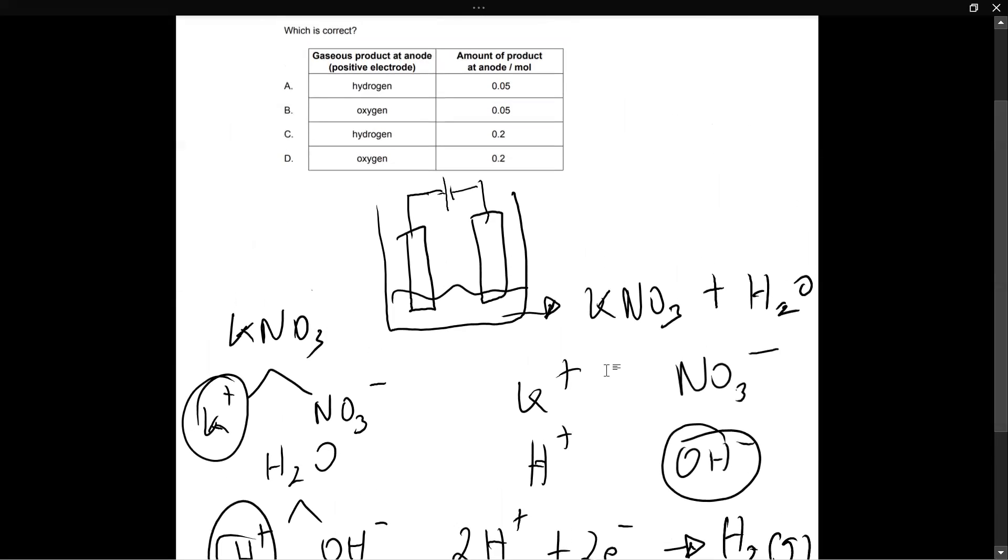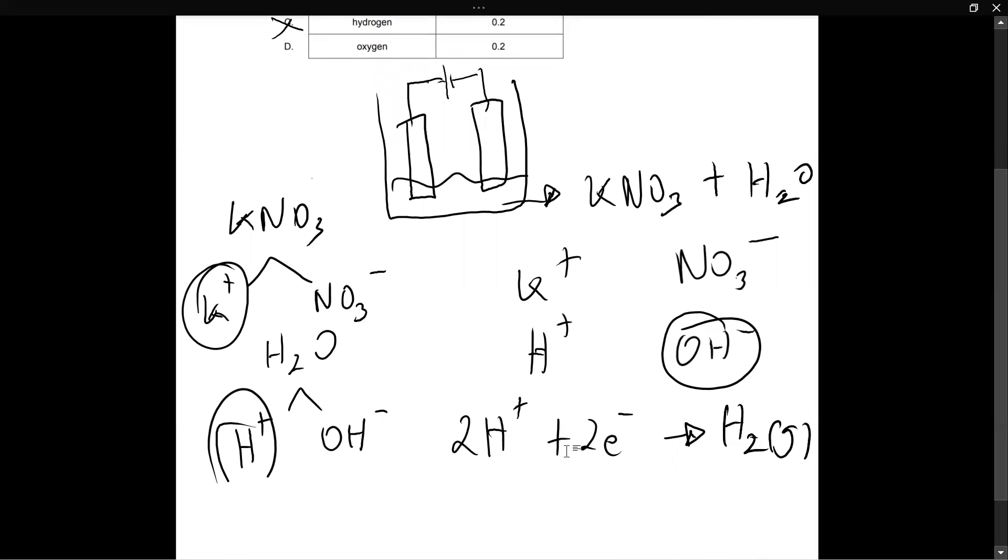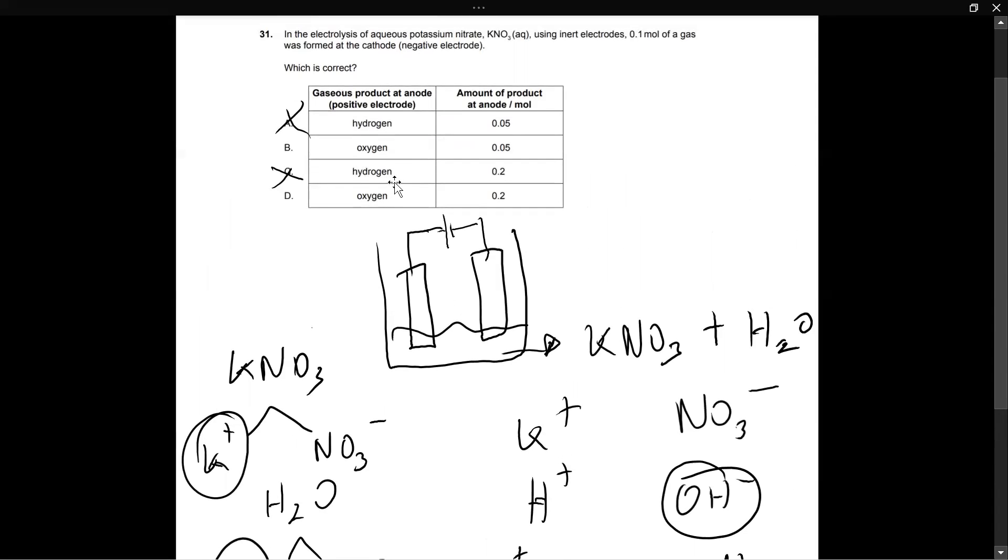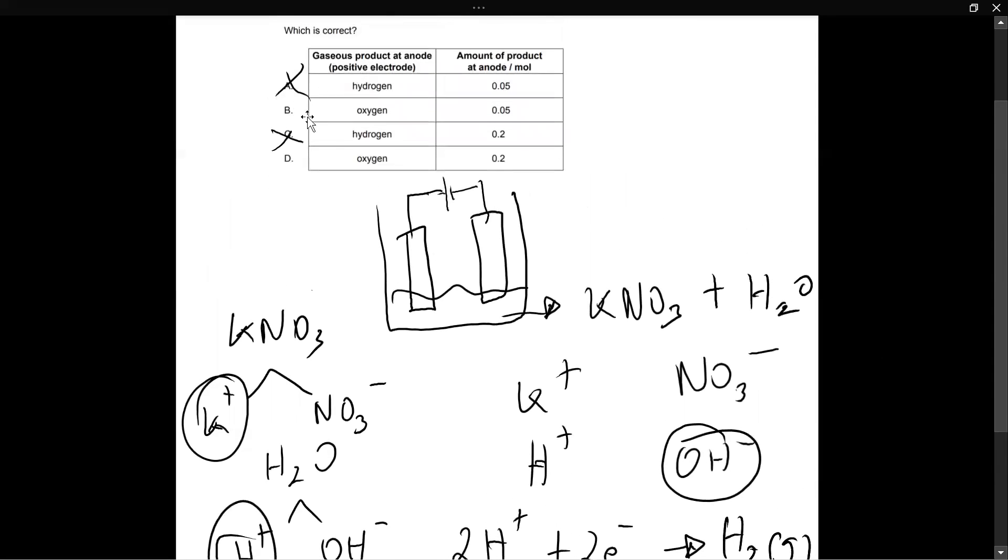Now from the options that we are given, the first thing that we can do is we can eliminate A and C. Why? Because they say that the gaseous product at the anode is hydrogen. And we know that this is not true because the gaseous product was hydrogen at the cathode, not the anode, because cathode is where reduction happens. And reduction is the gain of electrons. So 2H plus gained two electrons to form H2 gas.